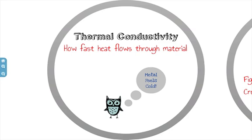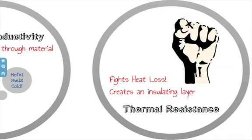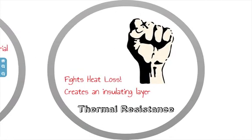Conductivity is the measure of the rate at which heat will flow through a material. Thermal resistance is basically when there is a limited amount of air movement — the wall surface will retain an insulating layer of air, lowering the energy loss from the building envelope.